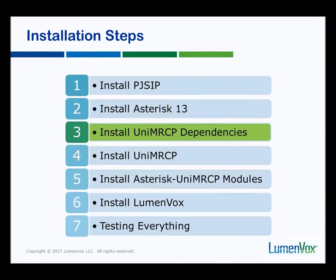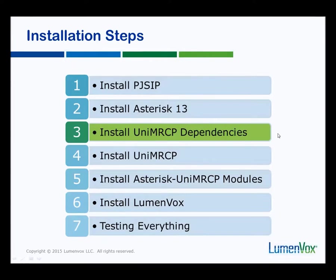These components here — this sequence is really the order in which you need to do things. So install PJSIP, install Asterisk 13, get everything running there, and only then move on to doing the UniMRCP stuff. The UniMRCP stuff is not one thing — it's actually three things you want to be doing. The first of these is installing the dependencies, before we even attempt installing UniMRCP itself.